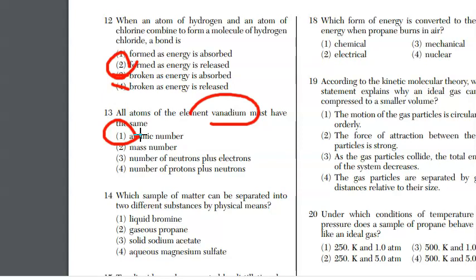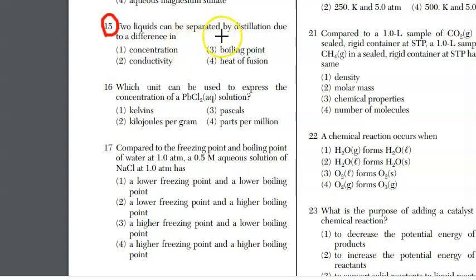For 14, which sample of matter can be separated into two different substances by physical means? In other words, we have a mixture. Liquid bromine is just bromine. Gaseous propane is just the compound propane. Solid sodium acetate is just the salt. It must be four. Aqueous magnesium sulfate means you have magnesium sulfate dissolved in water and it can be separated back out. For question 15, two liquids can be separated by distillation due to a difference in boiling point. It's a fact.